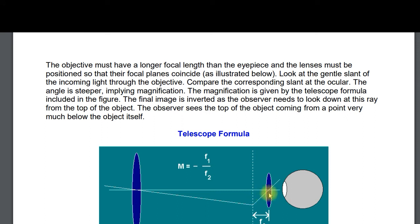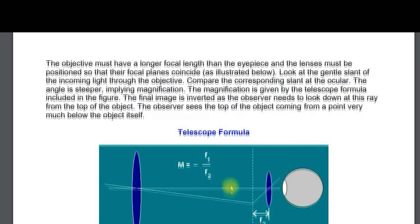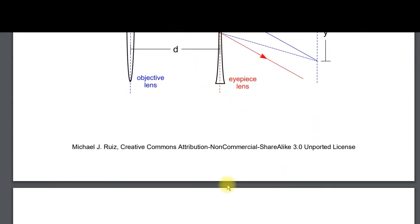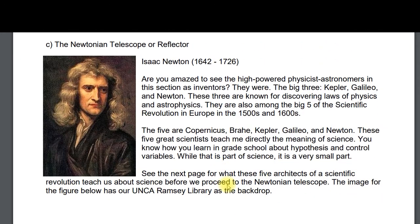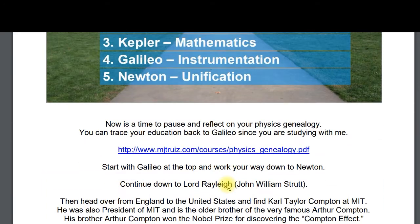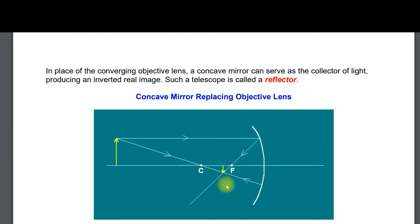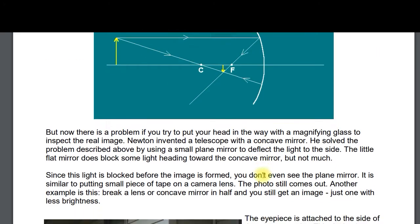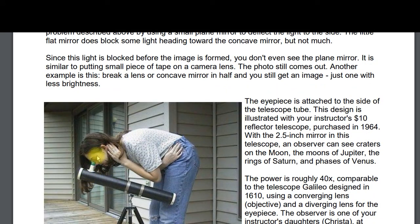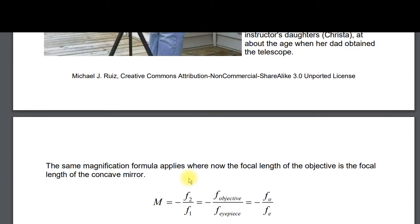Remember two things: you add the focal lengths to place the two optical elements, and you take the ratio with a minus sign — the bigger focal length over the little one — to get a large magnification number. Don't worry about the proofs of these formulas. For the Newtonian telescope, know that the concave mirror replaces or is the objective, and you have a small flat mirror to deflect the beam so your head doesn't block the light.